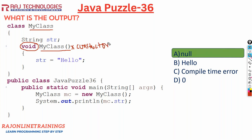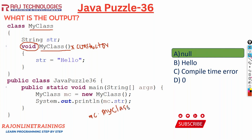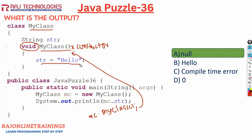Since it has a void return type, this becomes an ordinary method. To execute it, you have to call it explicitly using the object: mc.myClass(). Only when you invoke that statement will the value of str become hello. But in our code, we only created the object - we did not call this myClass method at all, so this method will not get invoked and str will not take the value hello.